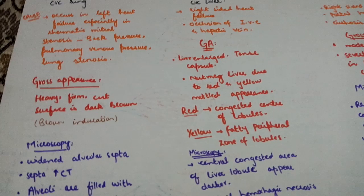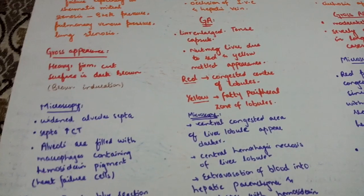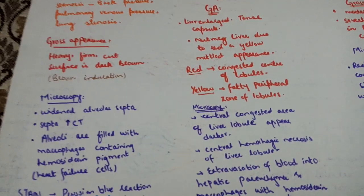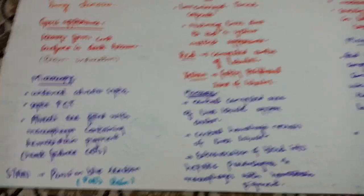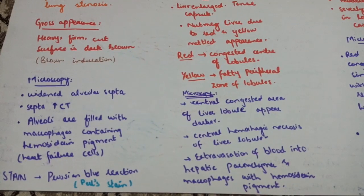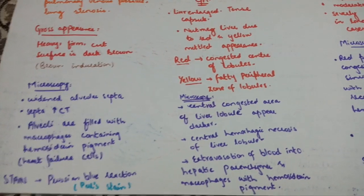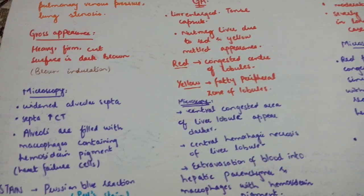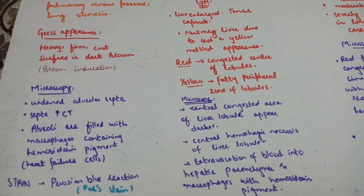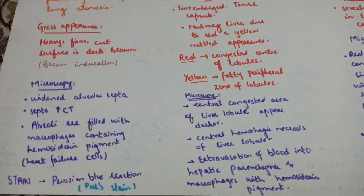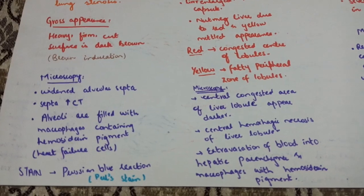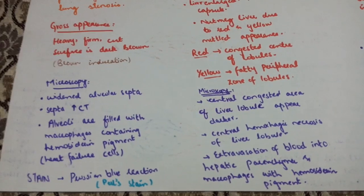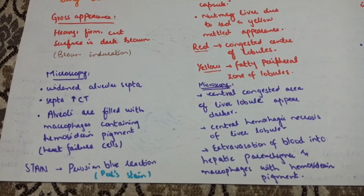The gross appearance of CVC lung: the lungs are heavy, firm in consistency, and when cut, the surface appears dark brown — this is called brown induration. Microscopically, you observe alveolar septal congestion with dilation of capillaries with blood, increased connective tissue, and alveoli filled with macrophages containing hemosiderin pigment, which stains positive with Prussian blue reaction.